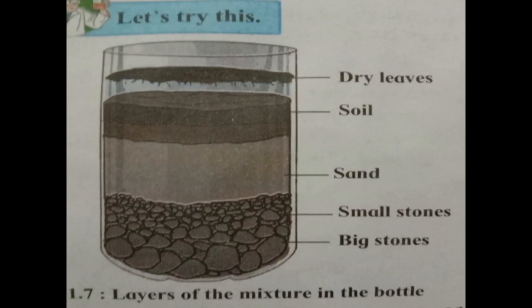Then we have to cut off the upper tapering part of the bottle. We have to cut the transparent bottle, put the rest of the materials in the lower part, and add water. We have to add all the things: soils, stones, sand, dry leaves, and water.